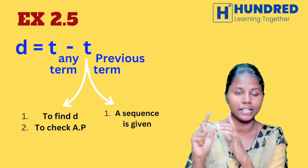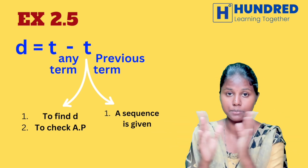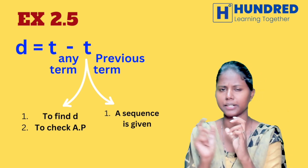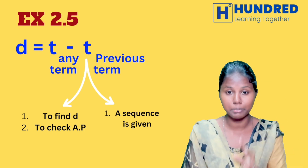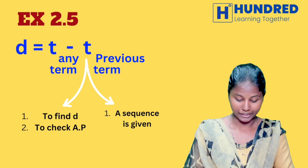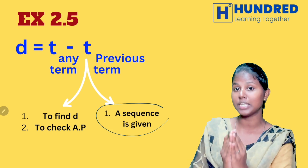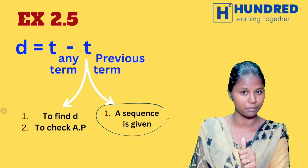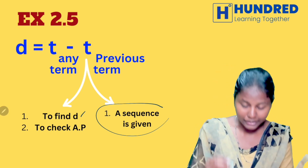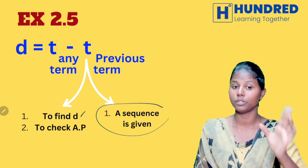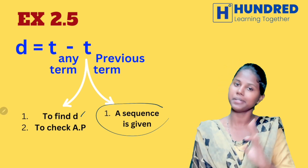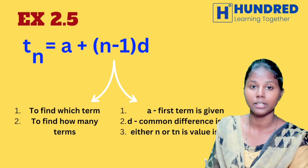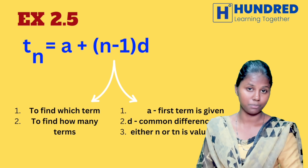The first formula is D. What is D? Any term minus that previous term equals D. And if we are going to note this, if we have an AP sequence, we can use this formula. We can use the D value to find the value. And if we check this formula, if we have the next formula, it is the TN formula, which means term.